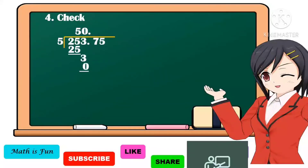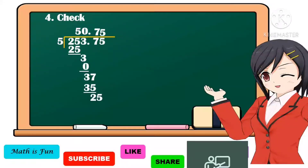0 times 5 is equal to 0. 3 minus 0 is equal to 3. Bring down 7. 37 divided by 5 is equal to 7. 7 times 5 is equal to 35. 37 minus 35 is equal to 2. Bring down 5. 25 divided by 5 is equal to 5. 5 times 5 is equal to 25. 25 minus 25 is equal to 0 — no remainder. We confirm that 50 pesos and 75 centavos is the price of 1 kilo of rice. Therefore, we get the correct answer to our problem.